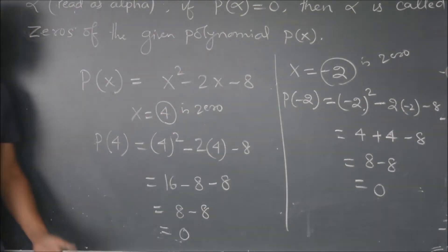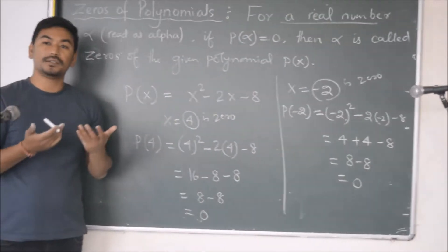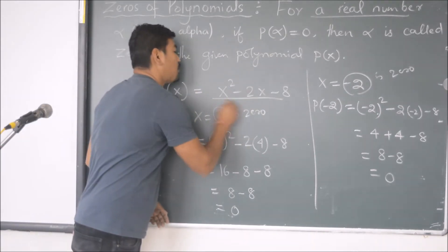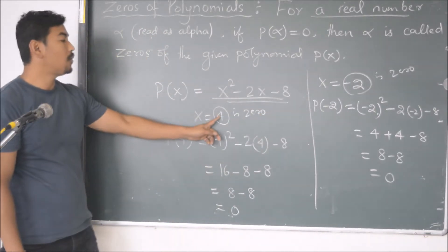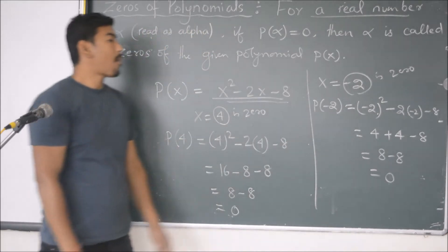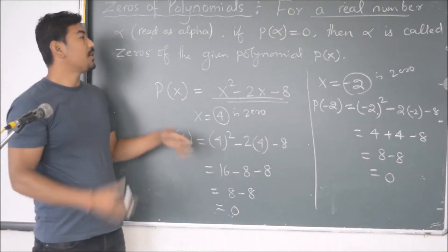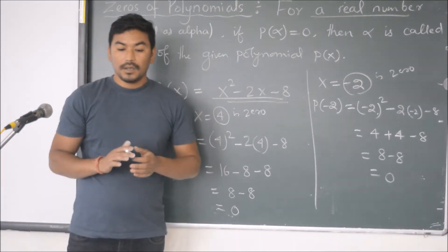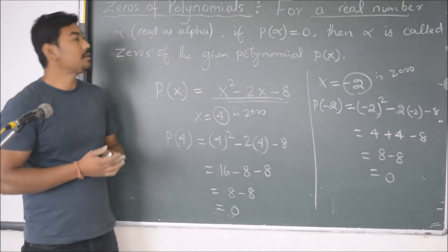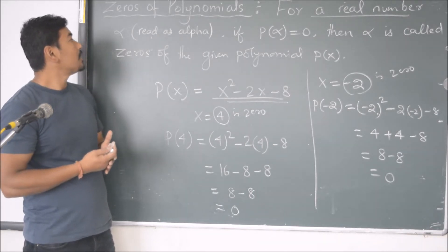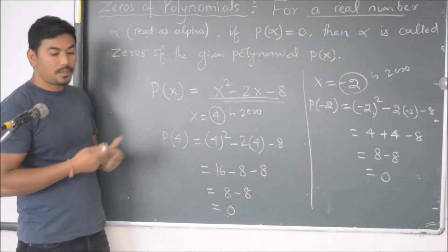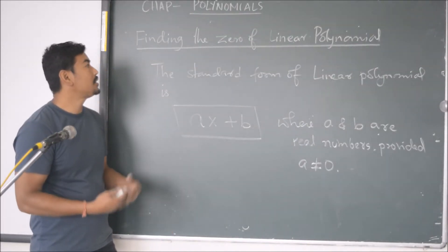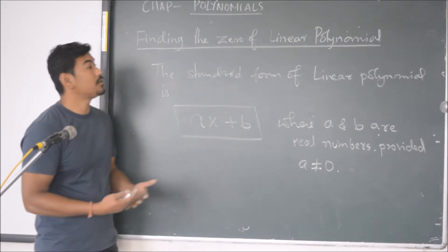In fact, a polynomial can have more than one zero. In this example, the zeros of this polynomial are 4 and minus 2. Now in the next section we are going to study the zeros of polynomials and their relationship with the coefficients, and I will tell you how to find the zeros of different polynomials.